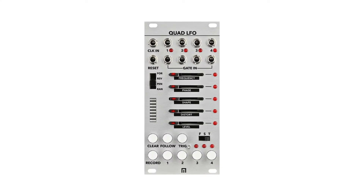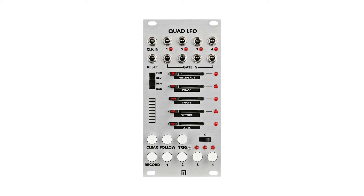The Malekko Quad LFO includes four channels of low-frequency oscillators, and each channel has its own motion-controlled sequencer. It will auto-save your settings to memory, or you can use it on the same power bus as the Varigate 4 Plus for up to 16 Quad LFO presets, or the Varigate 8 Plus for up to 100.